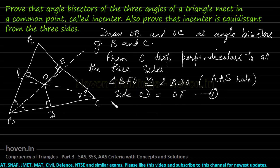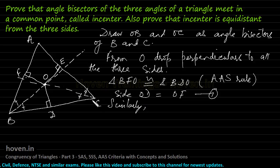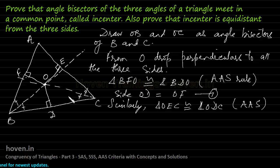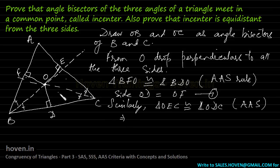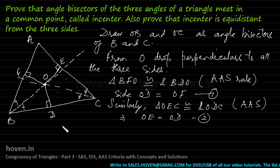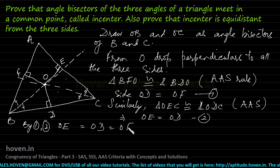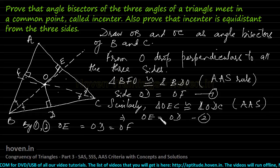Similarly, we can see that triangle OEC is congruent to triangle ODC — again by the AAS rule — because this angle is 90, this angle is equal because OC is the bisector, and OC is common. By the AAS rule these two triangles are congruent, which again implies OE equals OD. This is our second equation.